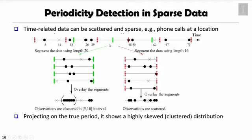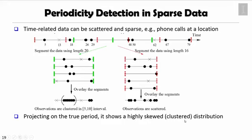What if we can guess the right period T? If T is 20 and we guess correctly, those points form a very dense cluster. However, if we get the wrong guess on the period, this mapping will be scattered along the whole period. That means the projection onto the true period shows a highly skewed cluster distribution. Based on this observation, in-depth algorithms have been developed to detect the true pattern and mine event periodicity from incomplete observations.